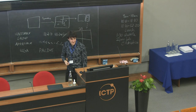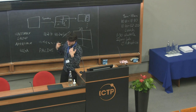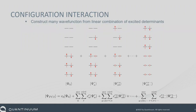Someone asked a very good question in the break: where did the qubits come into the configuration interaction? Basically, the qubits can represent occupation numbers. If you look at these configurations here, this would be a 12-qubit problem. The first six qubits would be 1, 1, 1, 1, 1, and the final six qubits would be 0, 0, 0. You can see all the possible combinations of 1s and 0s, which come from the 2^n possible qubit configurations.